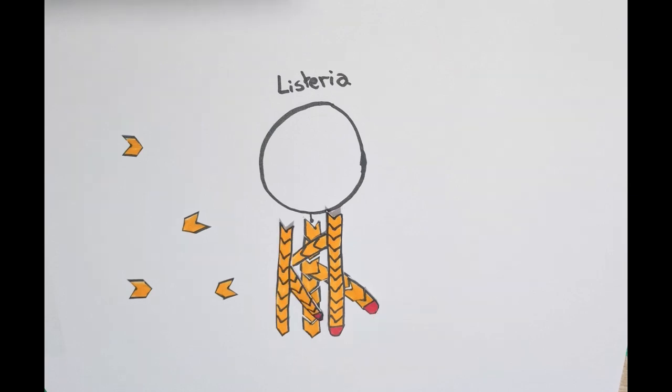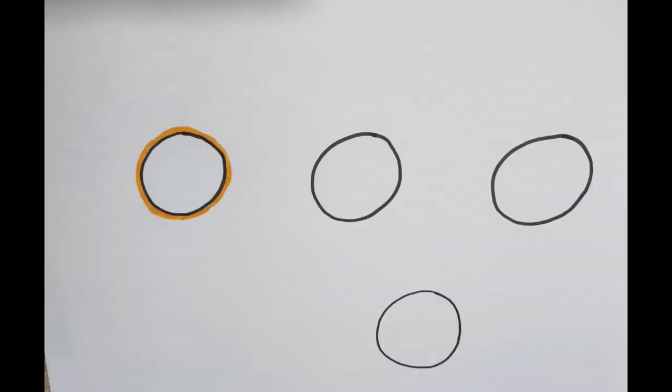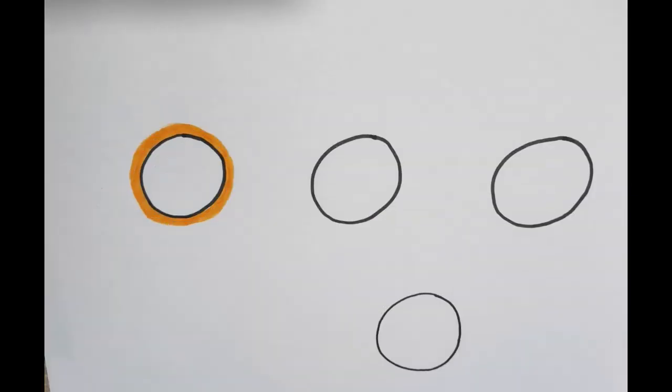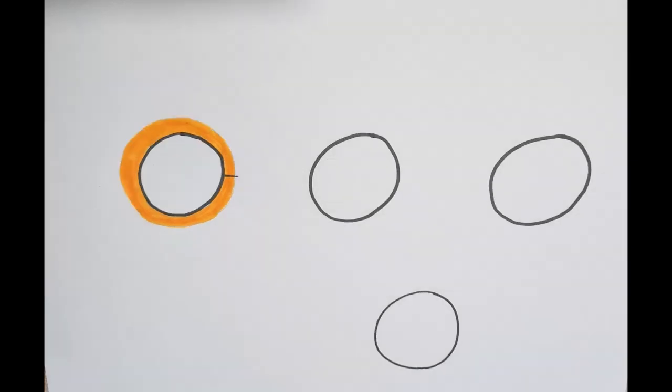Addition of these filaments creates an actin gel. This viscoelastic gel first grows equally, then a symmetry is broken due to elastic force.